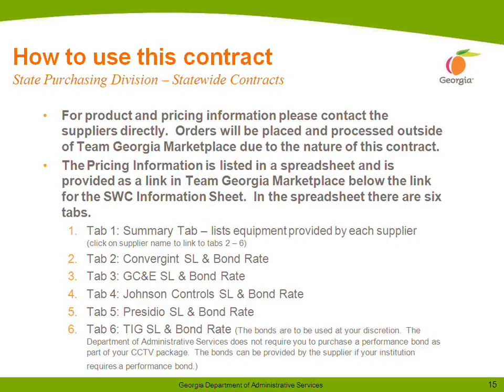The next thing we're going to go through is how to use this contract. Because of the nature of this contract, we are not going to use a hosted catalog in Team Georgia Marketplace. For product and pricing information, you'll want to contact the suppliers directly — they can answer your questions and guide you through this process. So your orders will be placed and processed outside of Team Georgia Marketplace. We do have a pricing spreadsheet that we've put together with some of your pricing information for the contract. You'll be able to find that in Team Georgia Marketplace. Once you enter the contract number or description, you can look up the contract info. There will be a link on that page to the statewide contract information sheet, and also below that link, you'll see the link for the pricing spreadsheet.